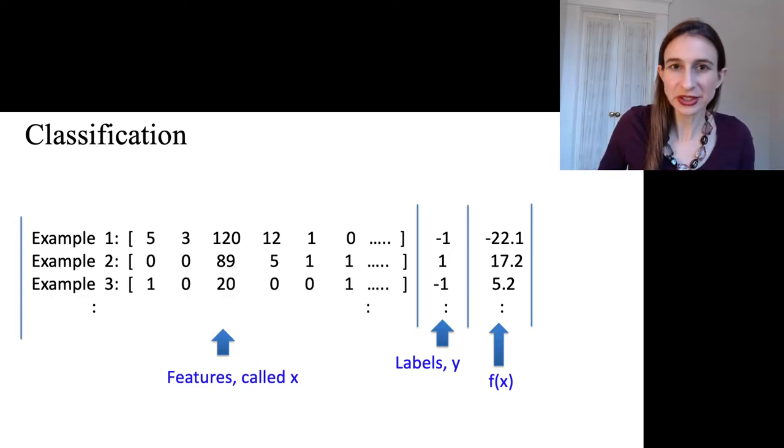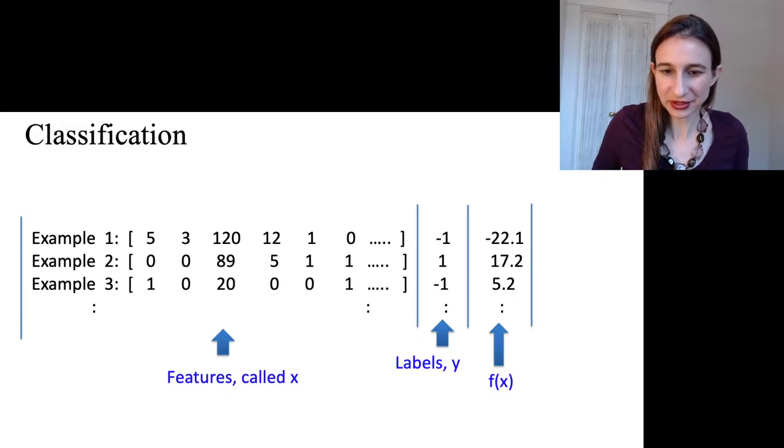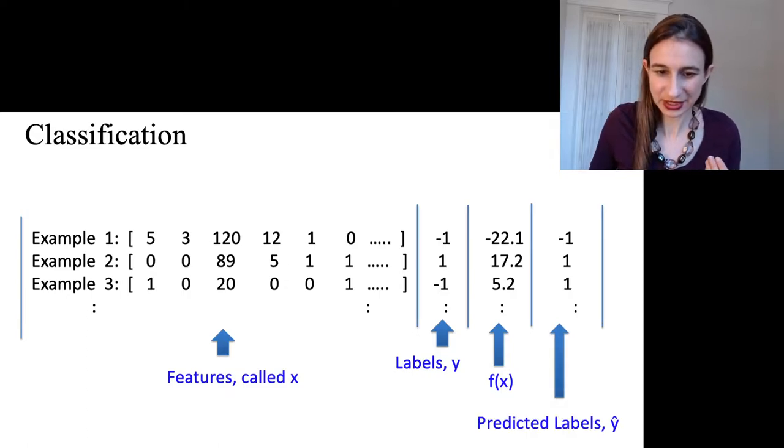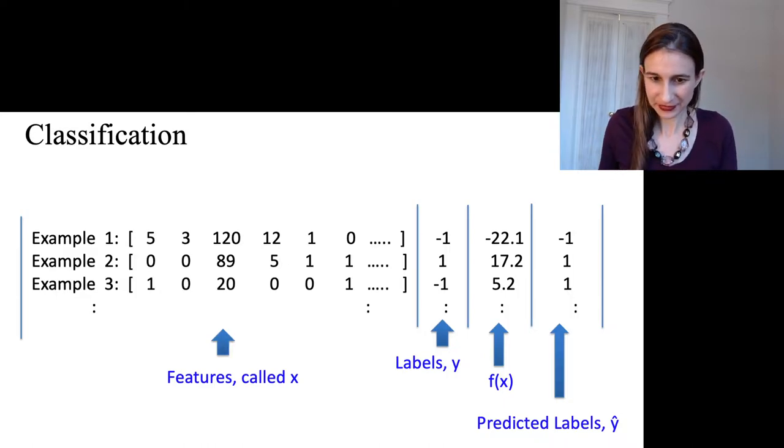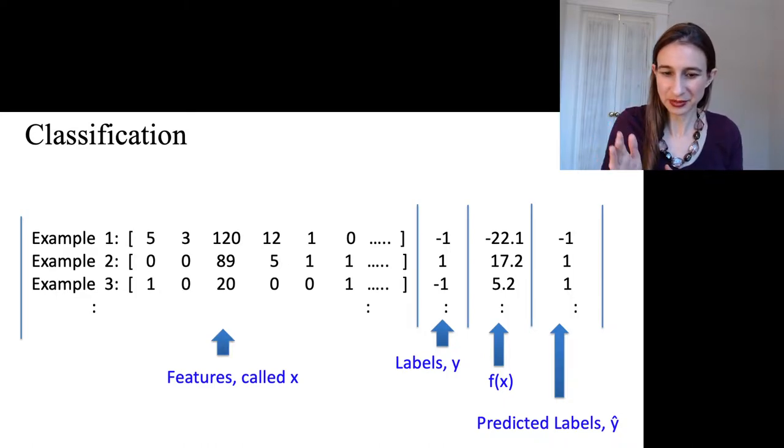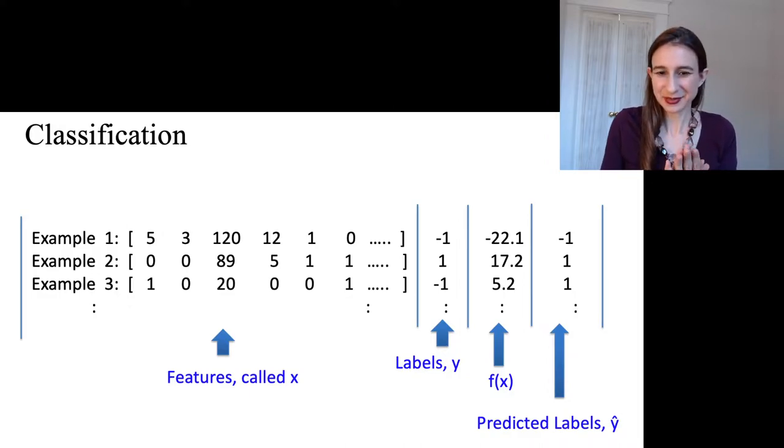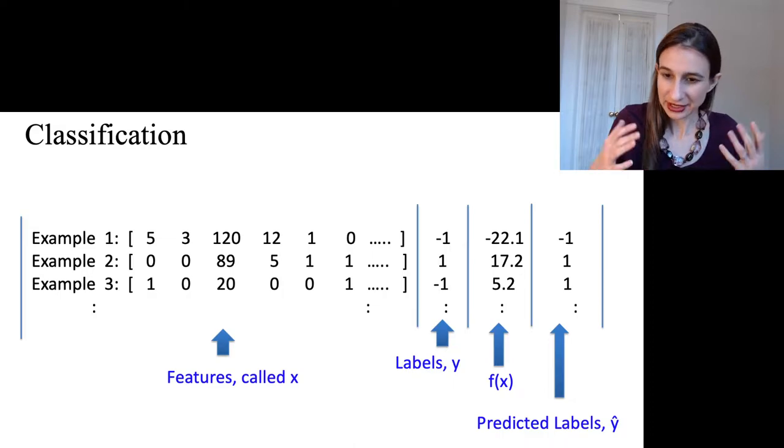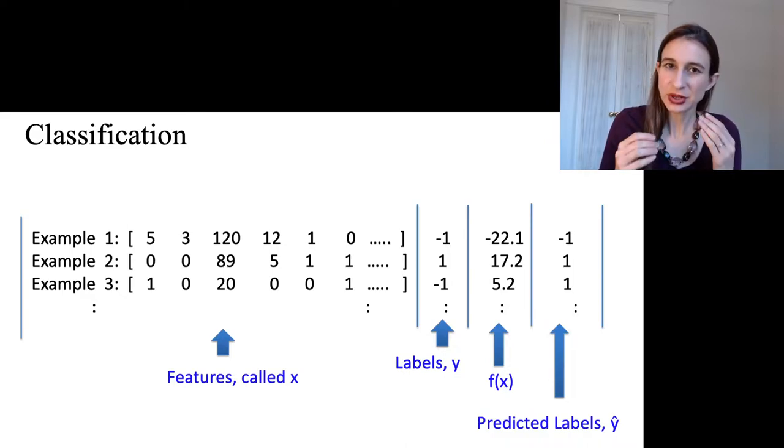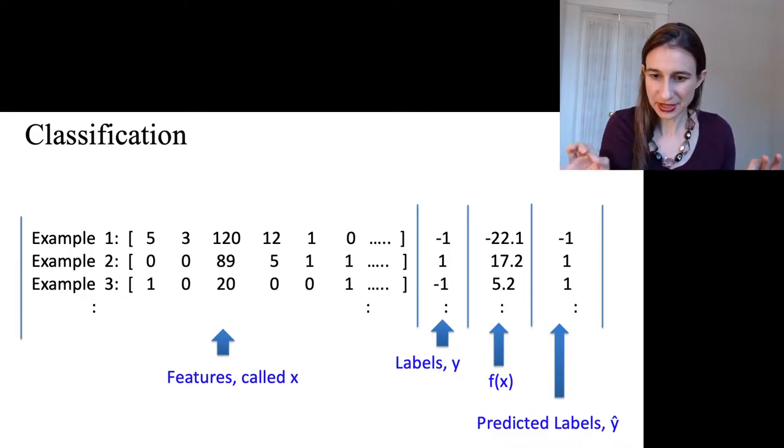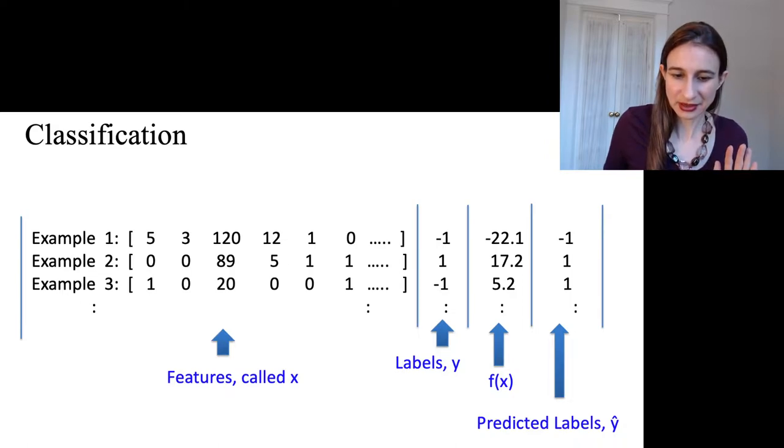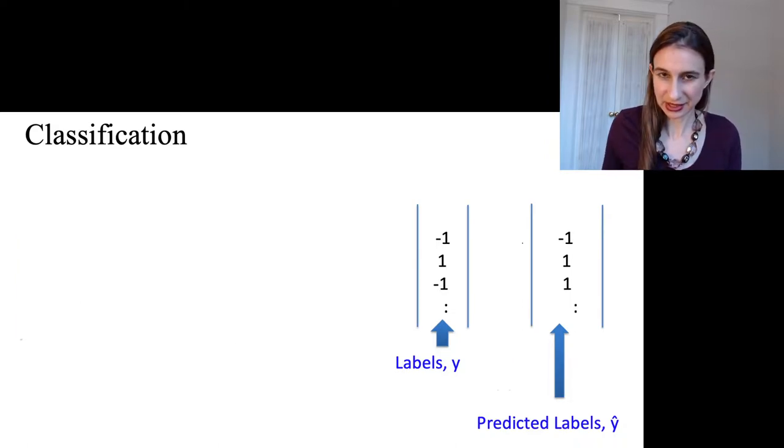Now, as I mentioned earlier, we often consider classification using the sign of f as the predicted label. So here in the predicted labels column, I've just placed the sign of the function f. Now to do an evaluation, we're just looking at whether the labels, the predicted labels, agree with the true labels. So the only thing I'm going to keep for now is the labels and the predicted labels.